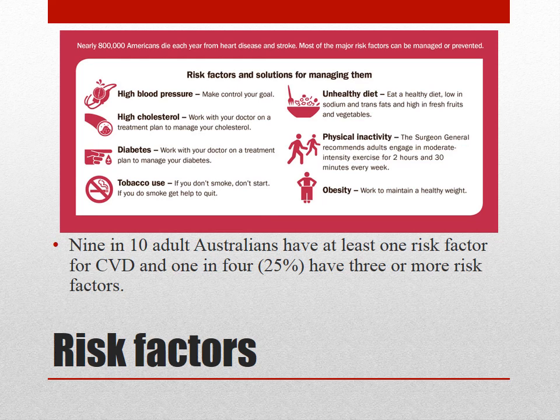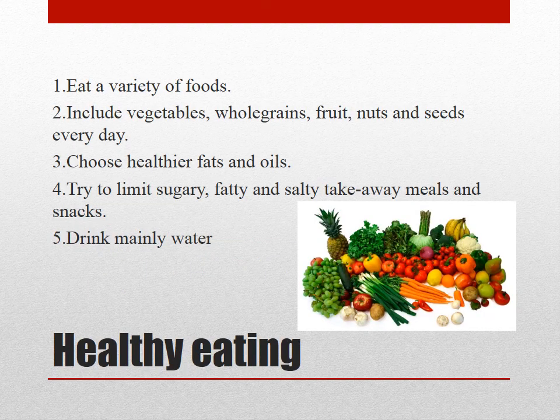Risk factors for cardiovascular disease include high blood pressure, high cholesterol, diabetes, smoking, unhealthy diet, physical inactivity and obesity. Nine out of ten Australian adults have at least one of these risk factors and one in four have at least three. If you look at your parents or grandparents you can see how many adults are heading towards cardiovascular disease. To avoid heart disease, follow a healthy diet: variety of foods, plenty of vegetables, whole grains, nuts and seeds, good fats, limiting sometimes foods like sugars, fats and salts, and mainly drinking water.